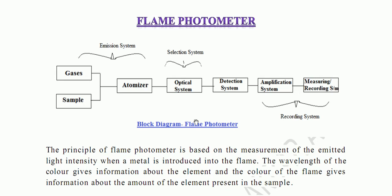In photometers, there is a type called the flame photometer. There is a block diagram with a light source that is a flame. The block diagram consists of an emission system, an optical system, and a recording system.